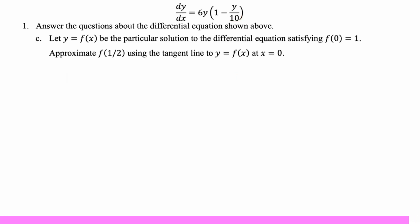Let y equal f of x be the particular solution to the differential equation satisfying f of zero is one. Approximate f of one half using the tangent line to y equals f of x at x equals zero. Just want to make sure that everybody follows along on how to sub in to an implicitly defined derivative. You're gonna have x's, you're gonna have y's, you have to sub in the ordered pair. So zero one, in this case, we're really only subbing in the y equals one, because there are no x's. So we're gonna have six, we'll have one minus one tenth. And then we have to clean this up. So that's six times nine tenths, and then that's 27 over five.